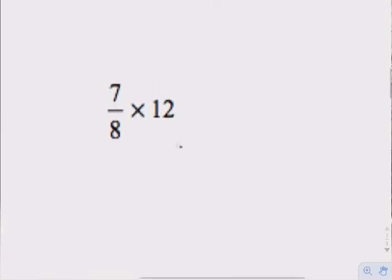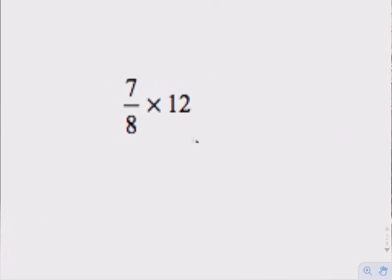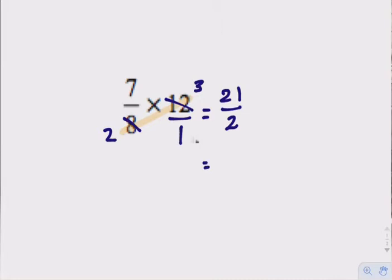Let's do 7/8 times 12. First, write 12 as 12 over 1. Now look at the diagonals: 8 and 12 have a common factor of 4. 8 divided by 4 is 2, 12 divided by 4 is 3. 7 and 1 have no common factors, and 2 and 7 have no common factors. Multiply: 7 times 3 is 21, 2 times 1 is 2 — giving us 21/2. We can leave it as 21 halves or convert to the mixed number 10 and one-half.